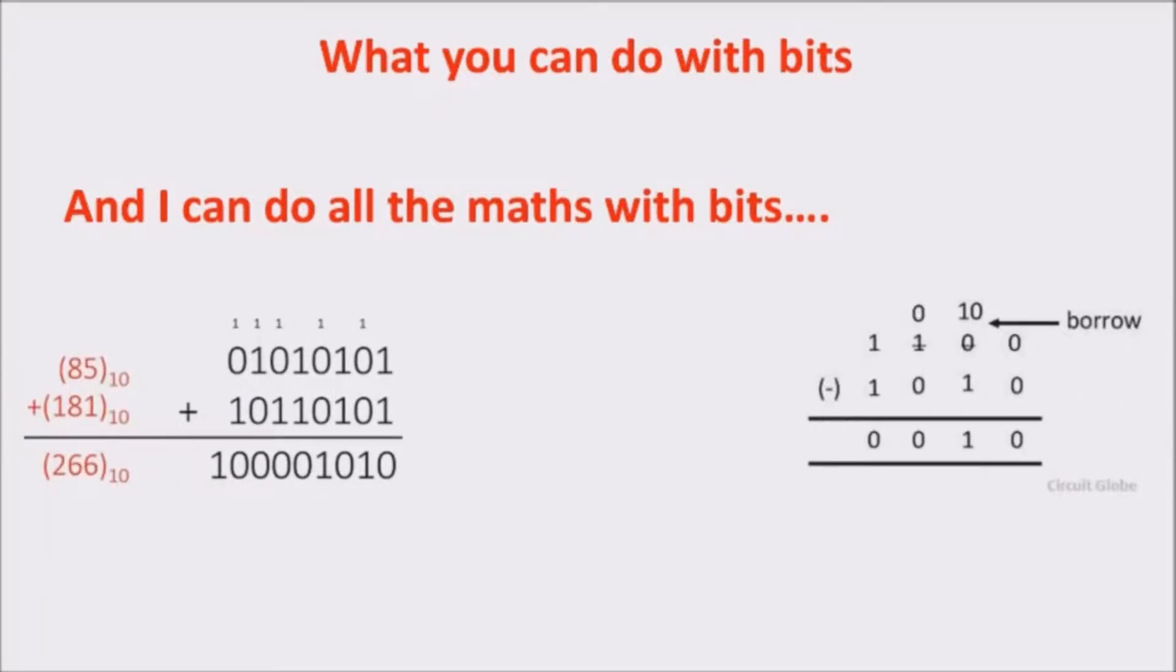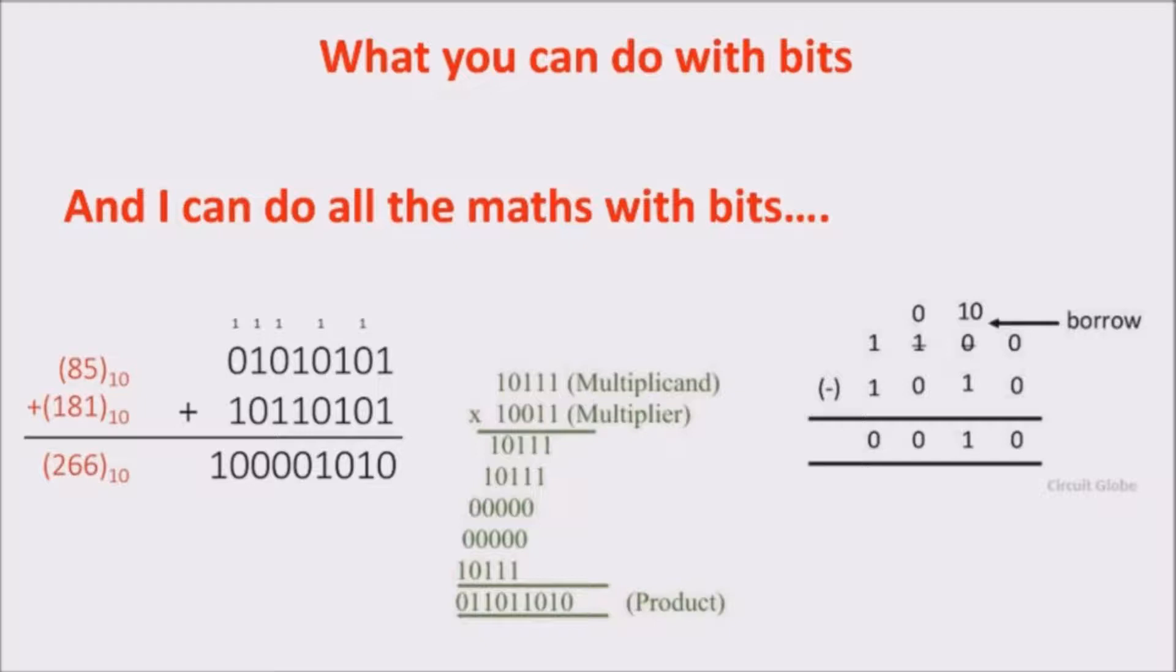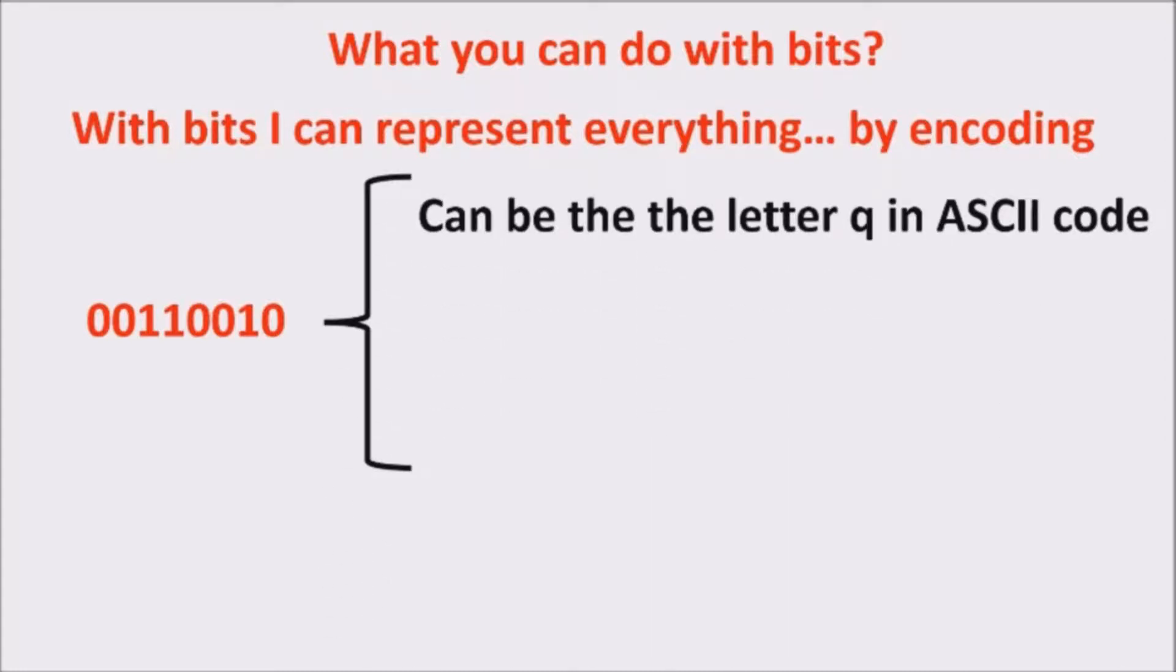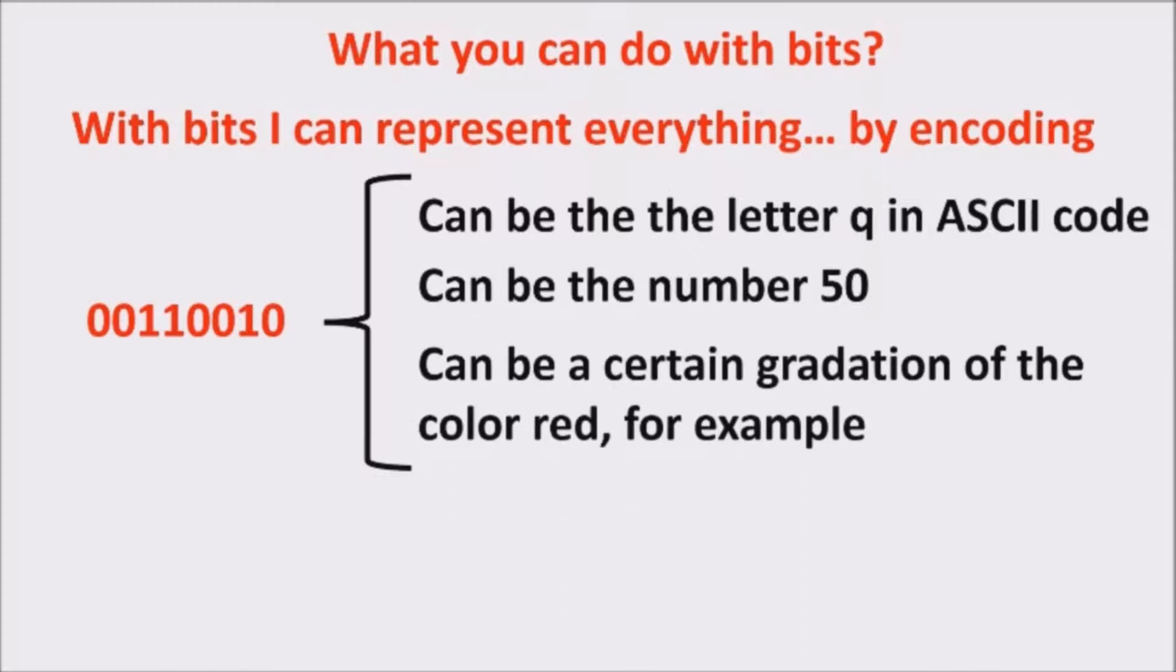We are used to the decimal system, but dealing with two states is easier for computers, because we can use a lot of small transistors in order to switch very fast between the two states, 0 and 1. So, with bits, you can represent everything by encoding. For example, the byte 00110010 can represent the letter Q in ASCII code, or can be the number 50, or can be a certain gradation of the color red, for example.